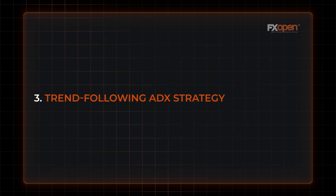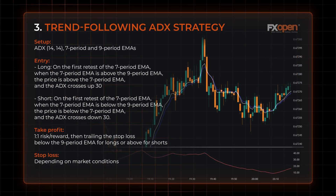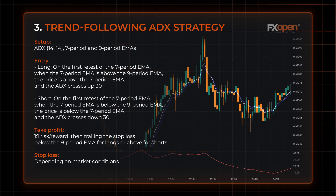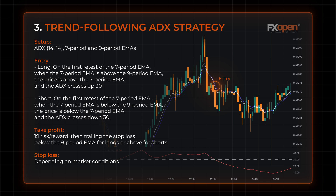The Trend Following ADX Strategy uses the Average Directional Index indicator alongside two fast Exponential Moving Averages to find trend-following opportunities. When the 7-period EMA is above the 9-period EMA, the price is above the 7-period EMA, and the ADX crosses above 30, traders go long on the first retest of the 7-period EMA.